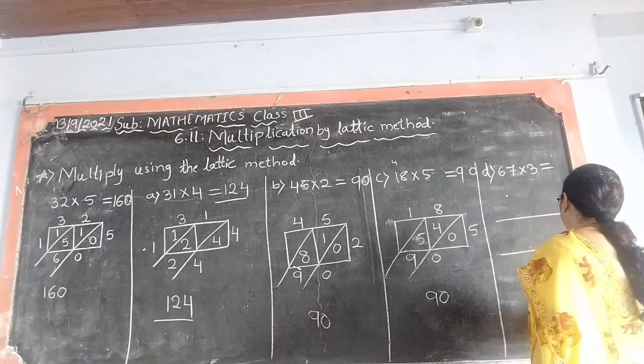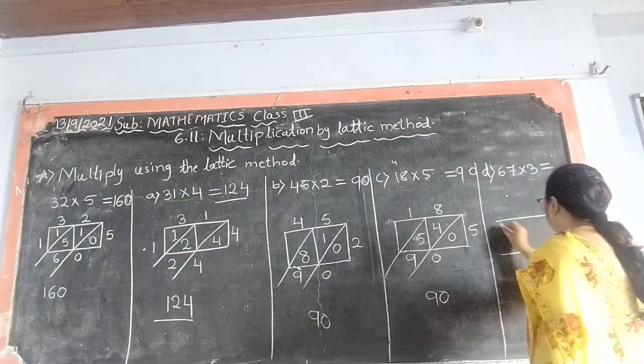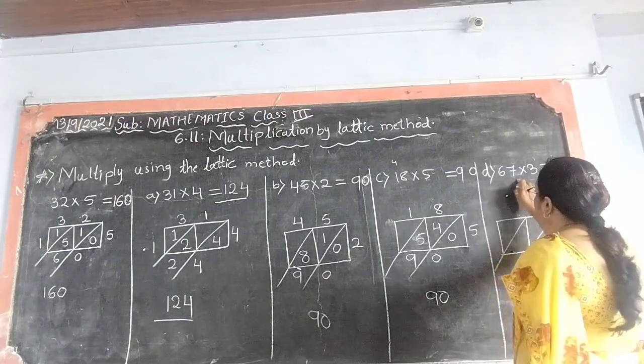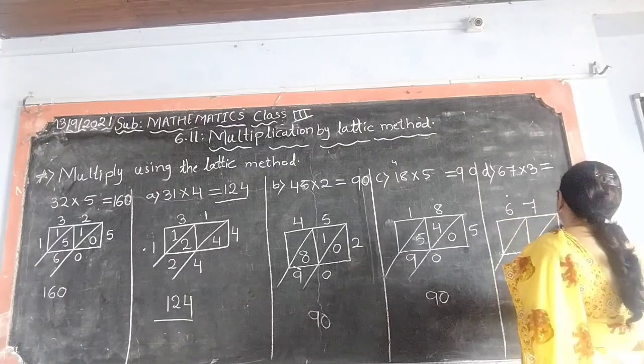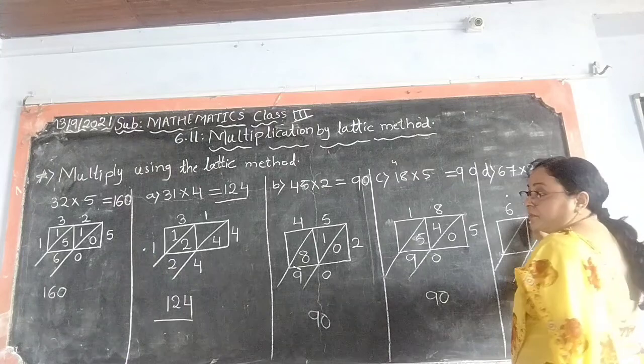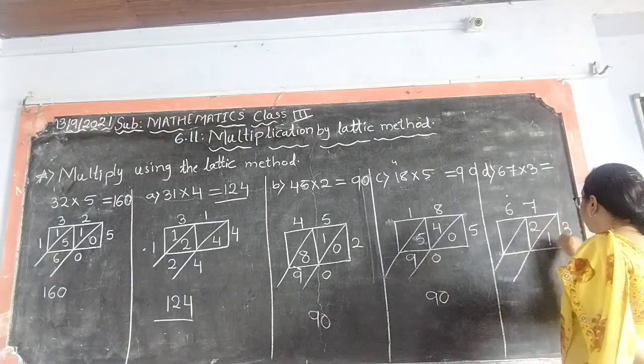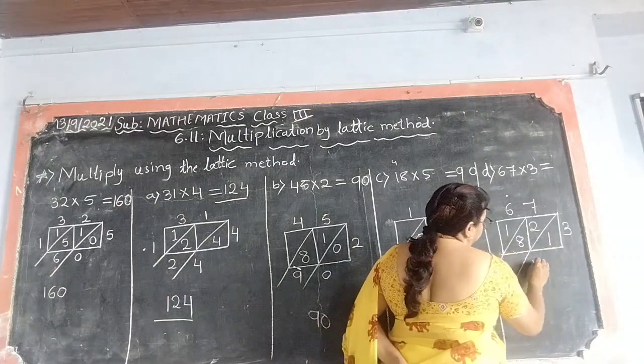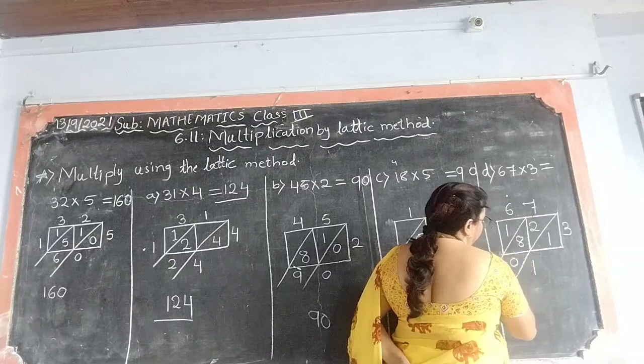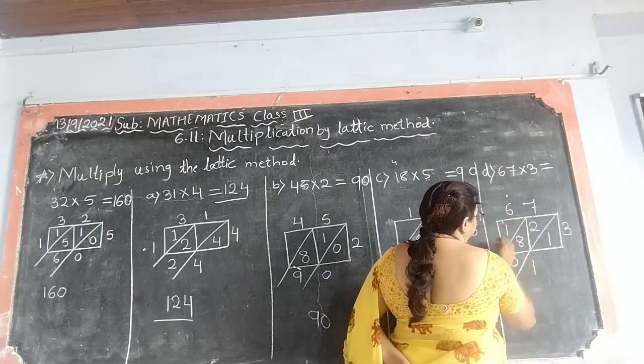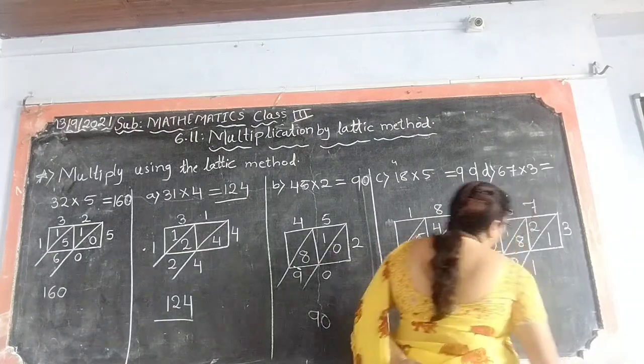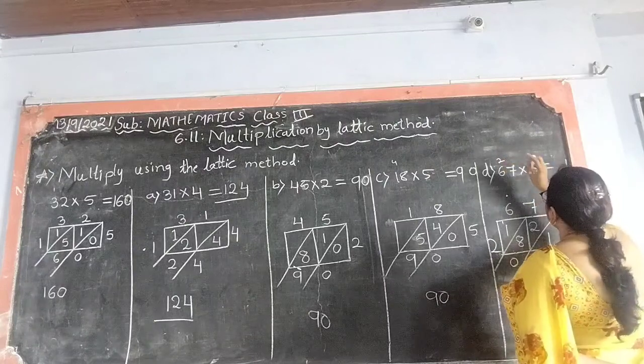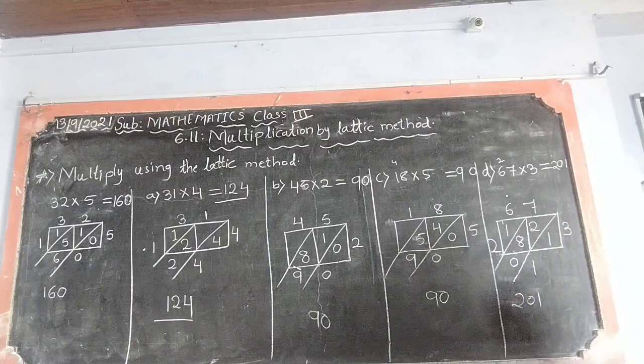We will draw the box. 67 is multiplicand and 3 is the multiplier. 3 sevens are 21. 3 sixes are 18. Very good. So, 1 as it is. 1 and 8, 9, 0, 1 given here as carry. 1 and 1 is 2, 201. Now, we will check the answer. 3 sevens are 21, 3 sixes are 18, 19, 20. I hope you understood.